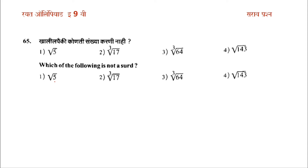The first is root 5. How are the third numbers? The third numbers are 3rd, the second number is 3rd, the third number is 3rd.